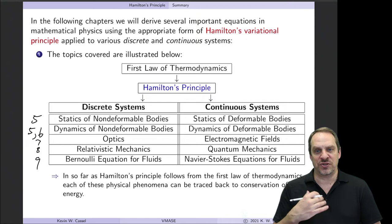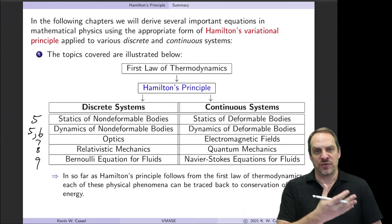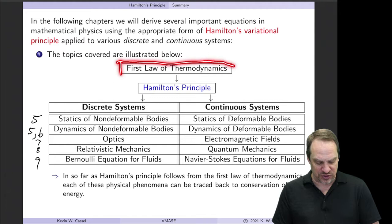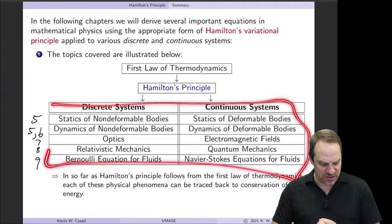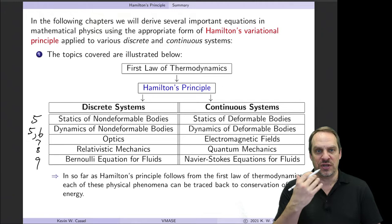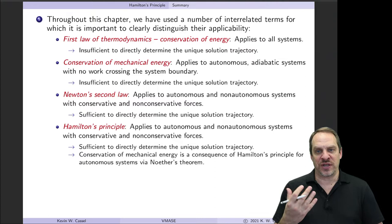I'd strongly encourage you to look at those sections and chapters covering topics of interest to you, to see how the physics you care about relates back to Hamilton's Variational Principle. I also want to emphasize that our derivation of Hamilton's Principle started with the first law of thermodynamics — conservation of energy. Insofar as Hamilton's Principle follows from the first law, all of these topics can trace their governing equations back to conservation of energy, illustrating how fundamental and powerful it is.